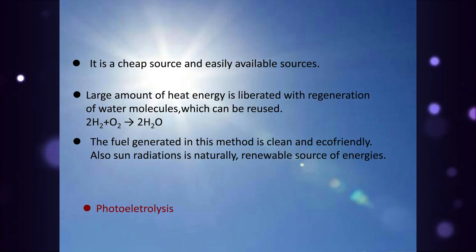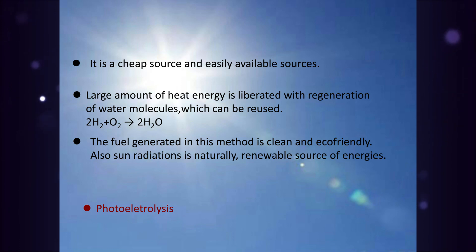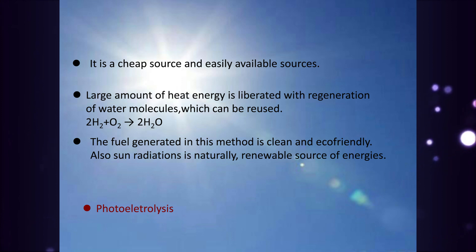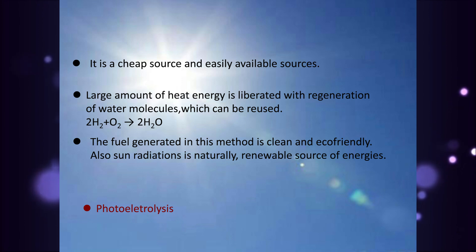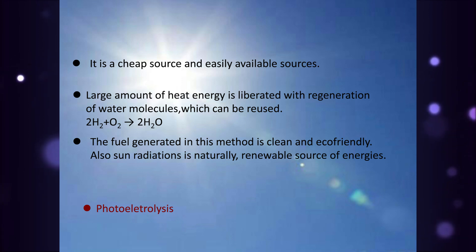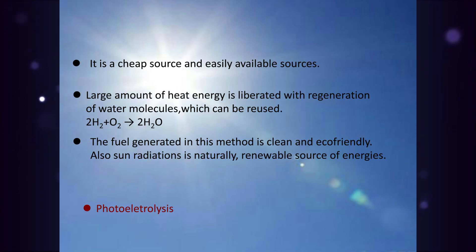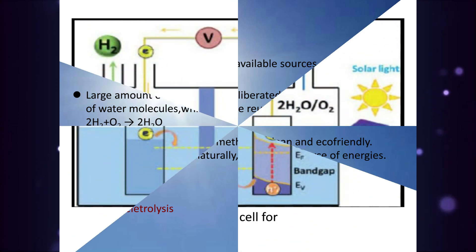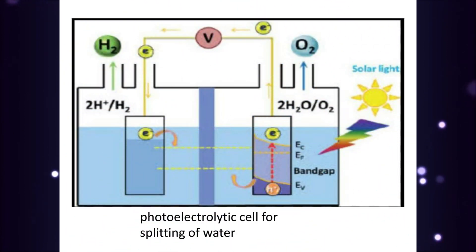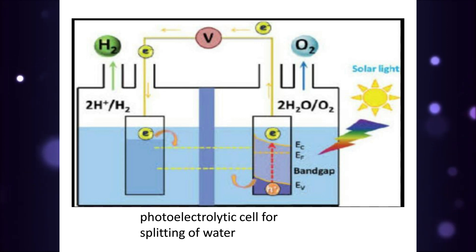Then, photoelectrolysis. It is a method used to convert solar energy into chemical energy, and then it is converted into a useful form of energy like electrical energy or thermal energy. It is also used as a fuel and oxidizer. The photodecomposition of water requires a potential of 1.23 electron volts and a wavelength of 1000 nanometers. This is a schematic diagram of a photoelectrolytic cell for the splitting of water.